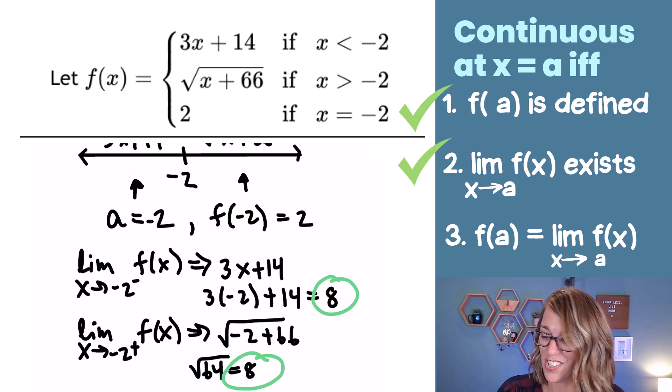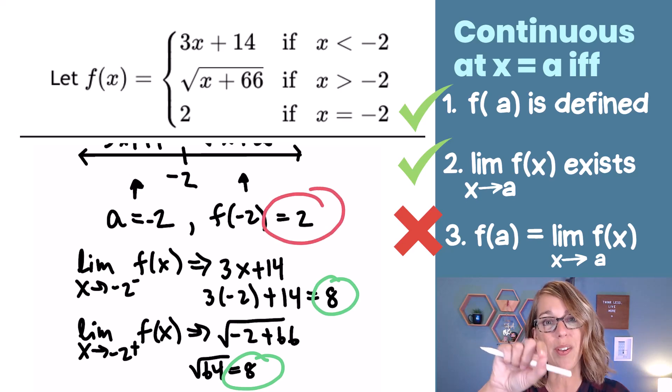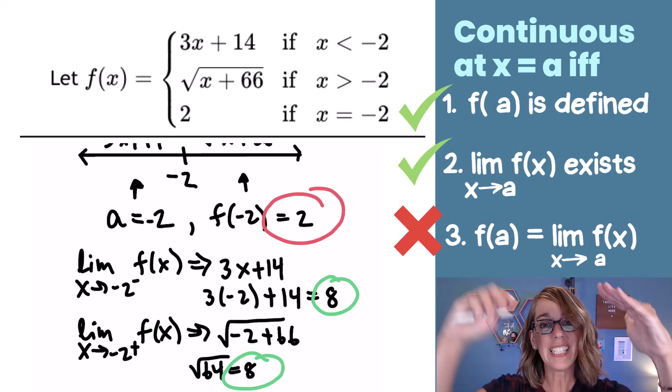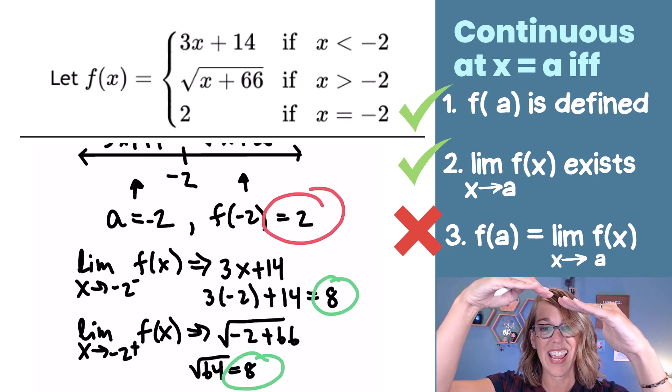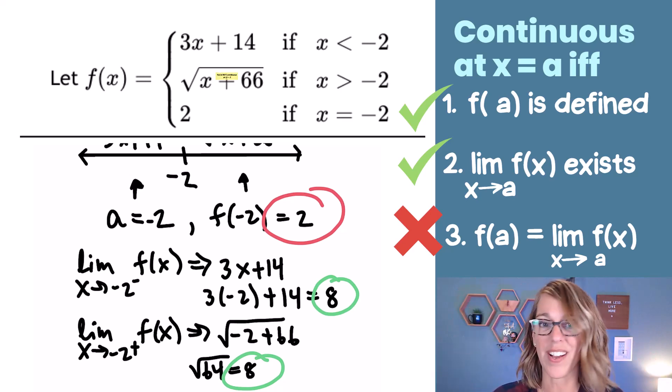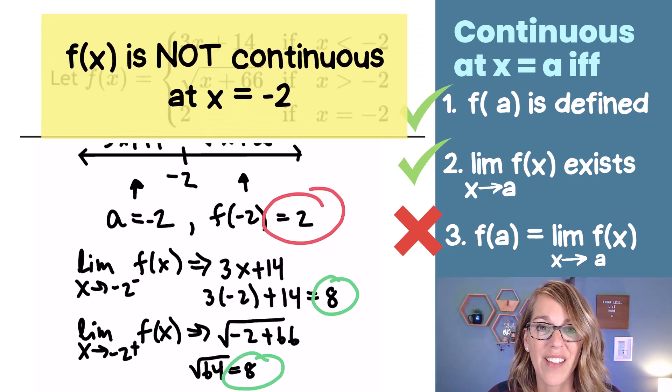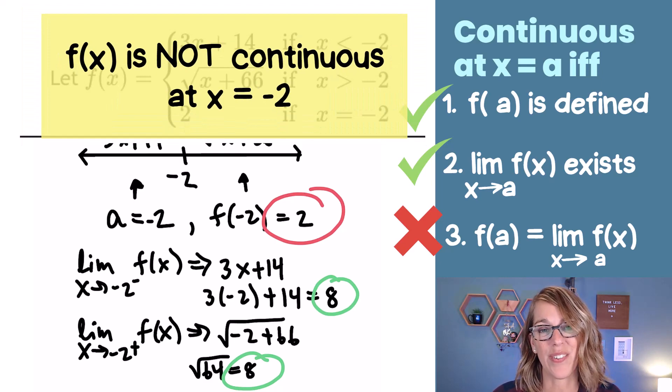However, the third condition is not satisfied. Take a look. My function value, that point was at 2, but my limit is up here at 8. So we do not have continuity, and we can say that f(x) is not continuous at x equals negative 2.